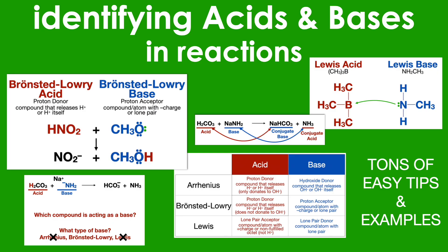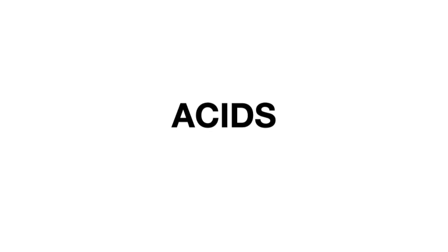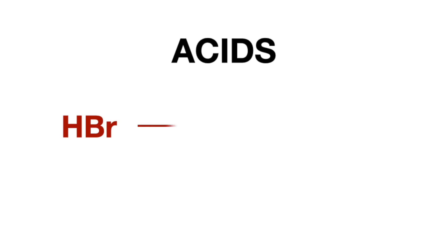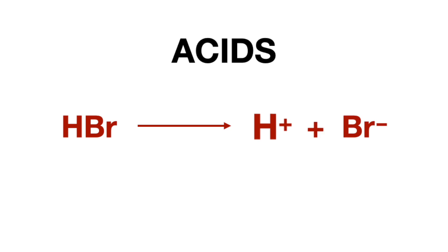If you watched the Identifying Acids and Bases and Reactions video in our chemistry playlist, then you probably already know how to easily identify acids, but I'm going to do a brief recap. Arrhenius and Bronsted-Lowry acids are proton donors, which simply means the acidic compound will break a bond with a hydrogen and release it as H-plus, or a proton, into solution.